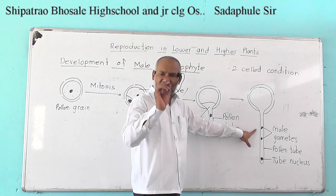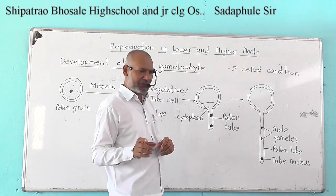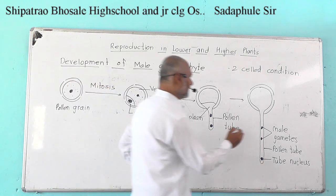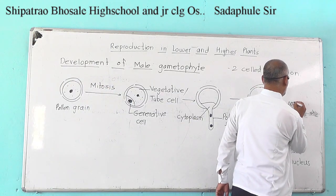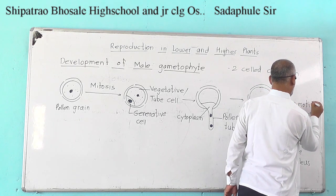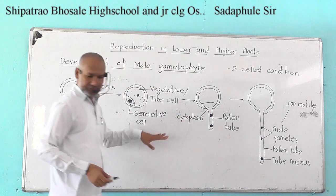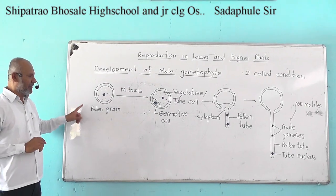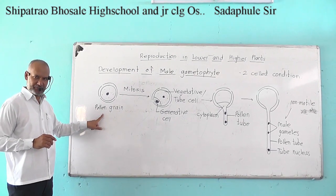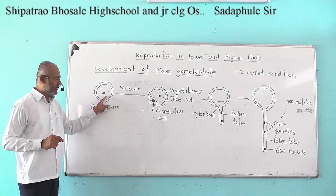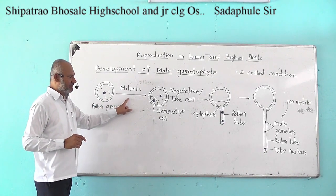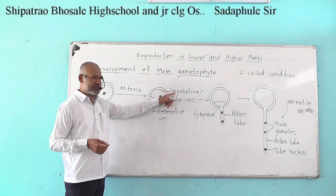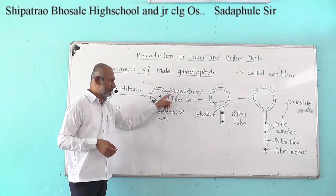Remember, these male gametes are unicellular, uninucleate, haploid, and always non-motile. Development of male gametophyte in angiosperms: male gametophyte develops from pollen grain. The protoplast of pollen grain divides by mitosis to form two unequal cells. The smaller cell is termed as generative cell while the larger cell is termed as tube cell or vegetative cell.